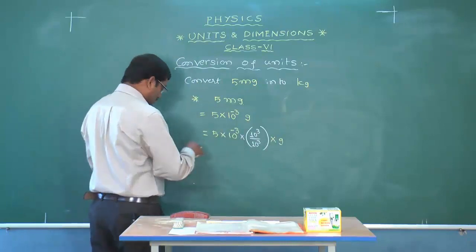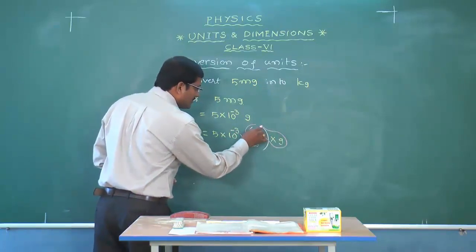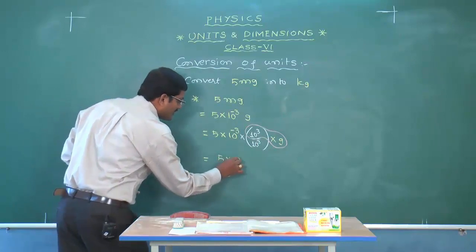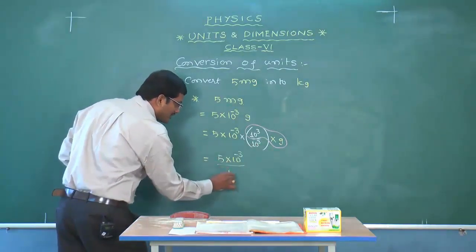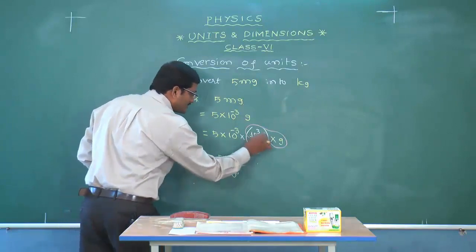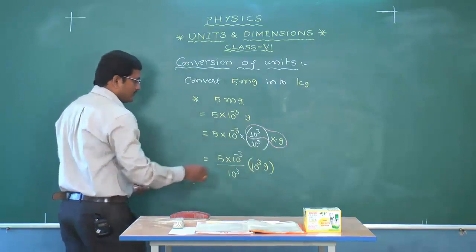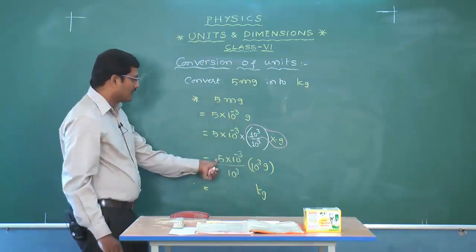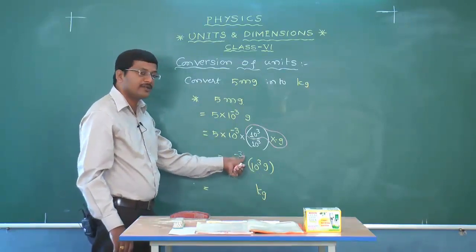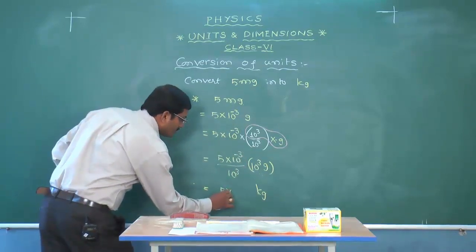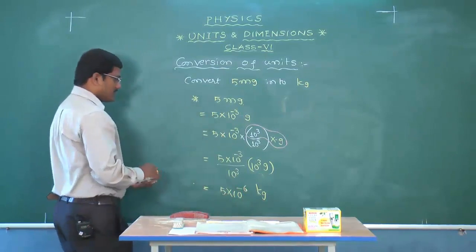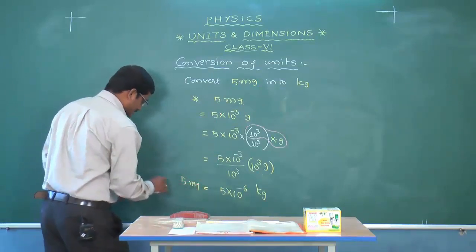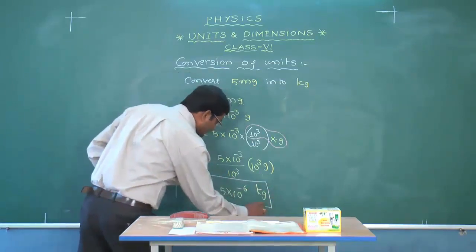Redistribute: take 10 to the power of 3 into g to get kg in the answer. So 5 into 10 to the power of minus 3, then 10 to the power of 3 goes to the denominator. When it goes to the numerator it becomes minus 3. Total value: 10 to the power of minus 6 kg. So 5 milligrams equals 5 times 10 to the power of minus 6 kg.